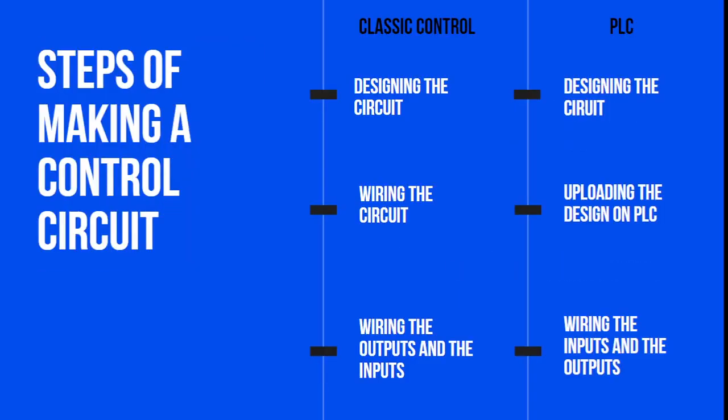Steps for making a control circuit using classic control: the first step is designing the circuit to achieve the target operation for the output device. The second step is wiring the circuit — connecting the physical components together using wires. The third step is wiring the outputs and the inputs.